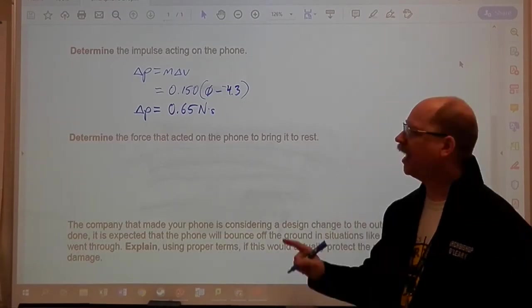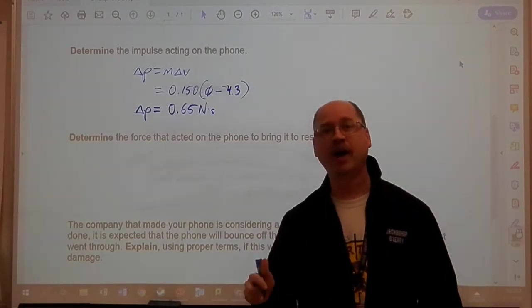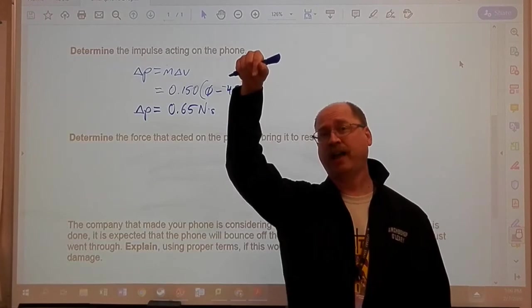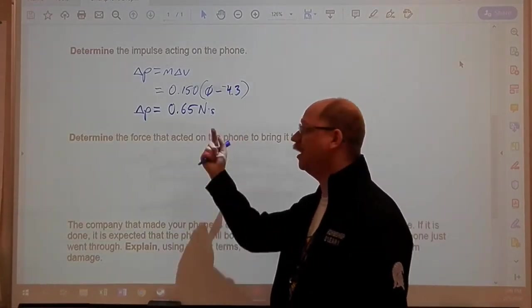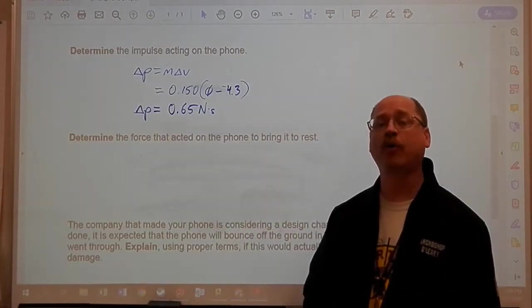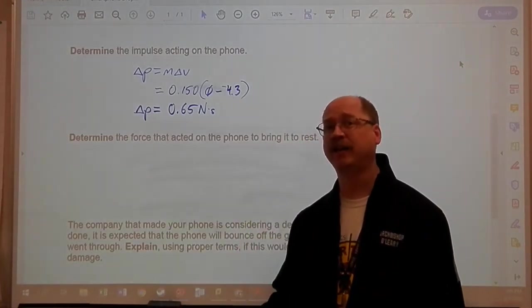It is positive impulse though, because the phone, when it fell, had negative momentum as it comes down and strikes the floor. The impulse is acting upwards, which is going to take away that negative momentum. That does bring us to this question though.